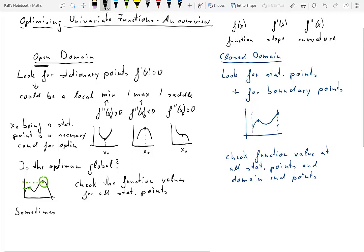Sometimes, however, life is a little easier because sometimes you can establish that the sufficient conditions for a stationary point also being a global optimum are being met.